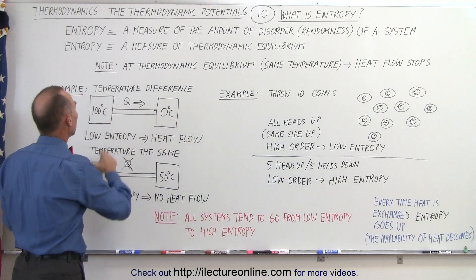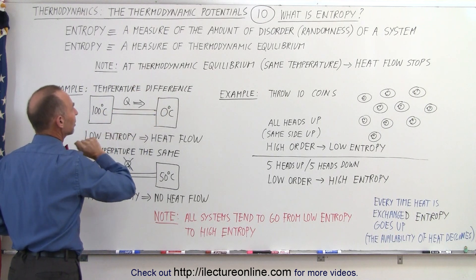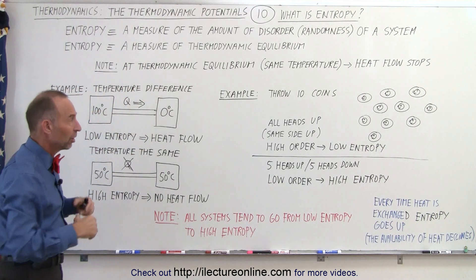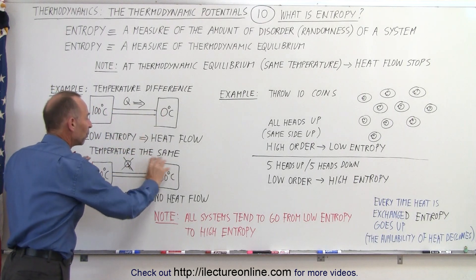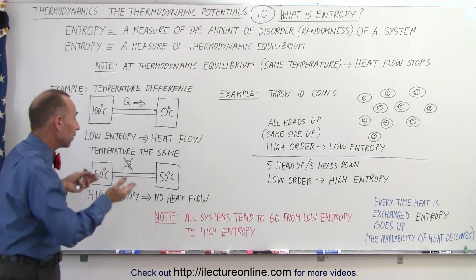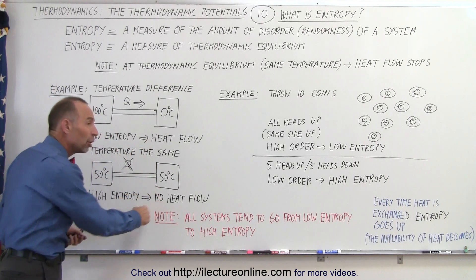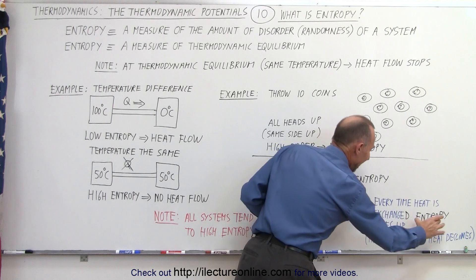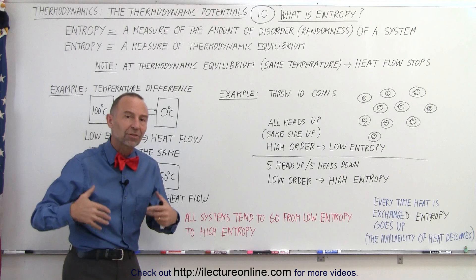Let's say we have two reservoirs — one where it's hot, one where it's cold. If they're connected with a heat conducting path, heat will travel from where it's hot to where it's cold. A temperature difference means a low entropy state. Then naturally, heat will flow across until the two reservoirs are at the same temperature, which means a high entropy state, because now there's no longer a differentiation in temperature. So high entropy means no heat flow, same temperature. Notice that every time heat is exchanged, entropy goes up.